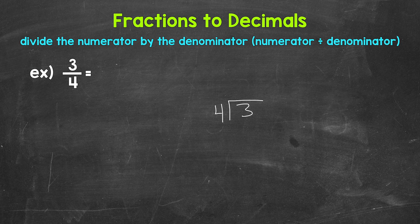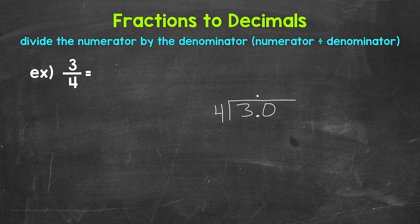Now we can go through the division process. We have 3 divided by 4. How many whole groups of 4 in 3? Well, we can't do that. So we need to use a decimal and a zero in order to work through this problem. Once we have the decimal and the zero, we can bring the decimal straight up into where the quotient, the answer will be. I'm going to extend this division bar here, and now we can think of this as 30 divided by 4.